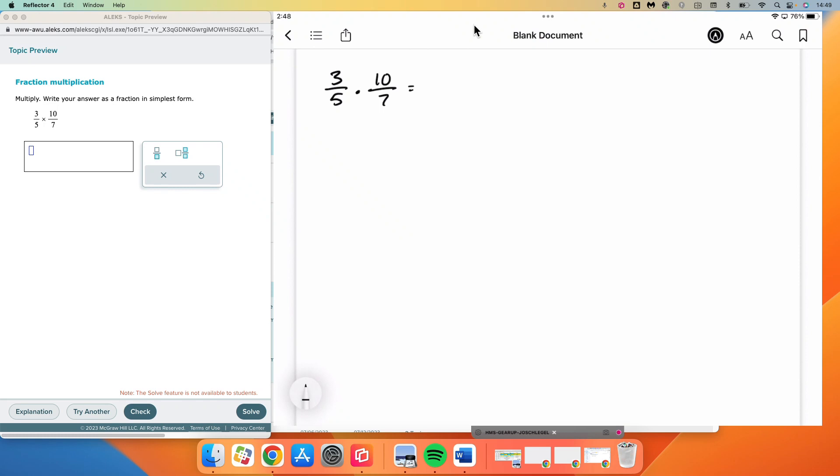And if we were to do the multiplication straight across, we get 30 over 35. Then we need to recognize that 30 over 35, both of those numbers are divisible by 5, and we would end up with 6 over 7.